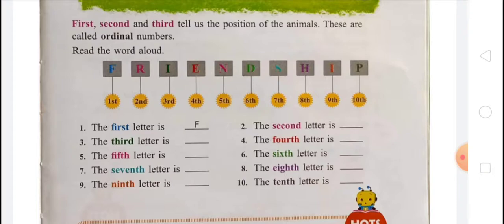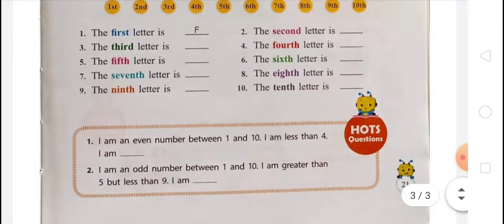You have to fill in all these things. Now there are some hot questions. I am an even number between 1 and 10. The even numbers are 2, 4, 6, 8, 10. I am less than 4, so the even numbers less than 4 are 2. So the answer is 2.